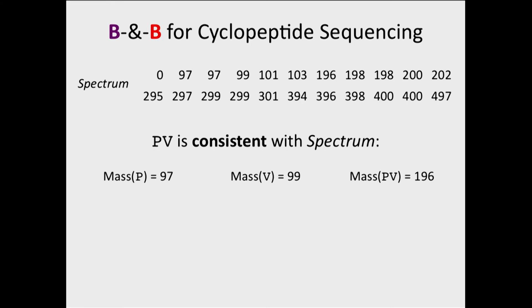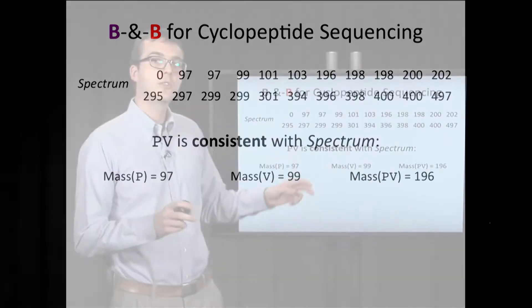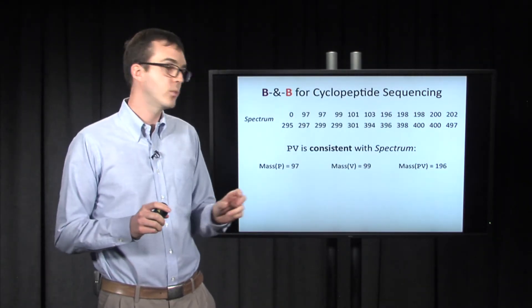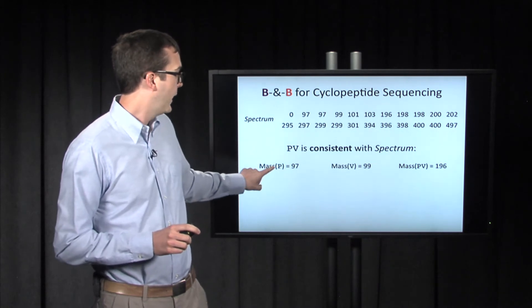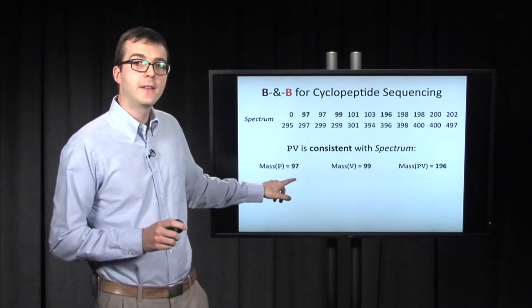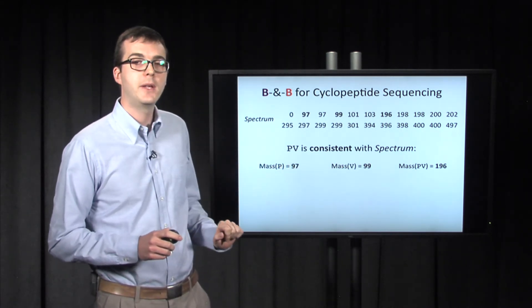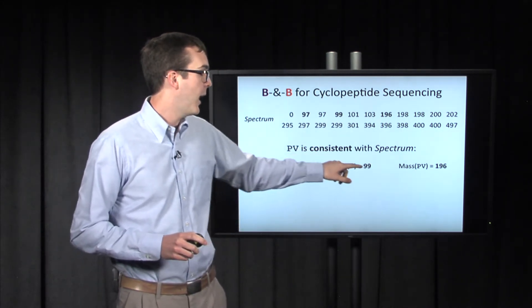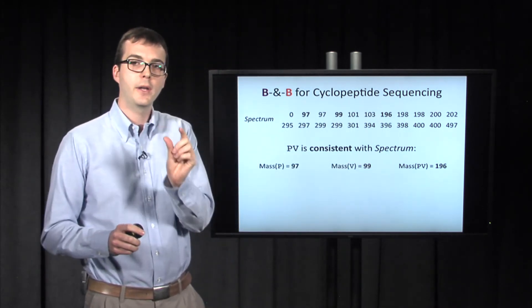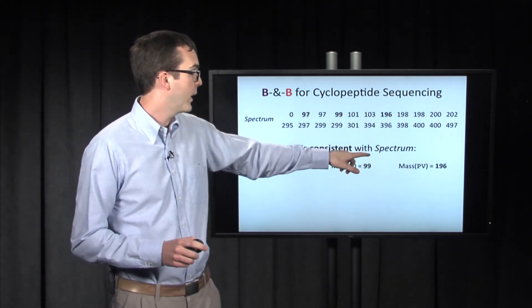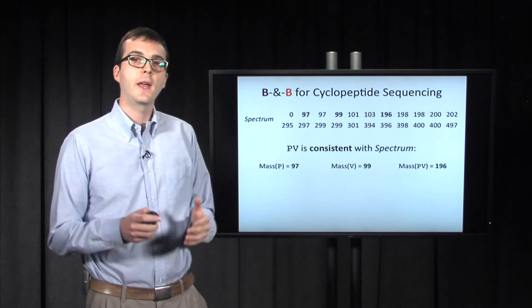So to do this trimming, we'll notice that PV is what's called consistent with spectrum. Here's one possible two-mer, and you'll notice that the mass of P is equal to 97. It's present. The mass of V, the other letter in PV, is present as 99. And the mass of this entire small linear peptide, PV, is 196, and it's also detected. So that's called consistent.